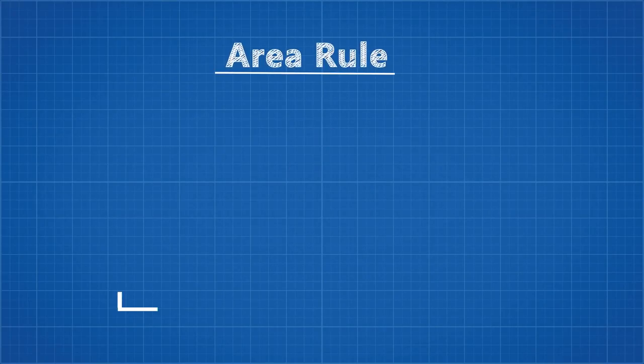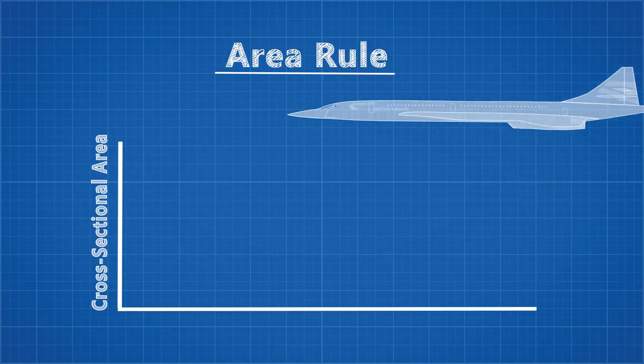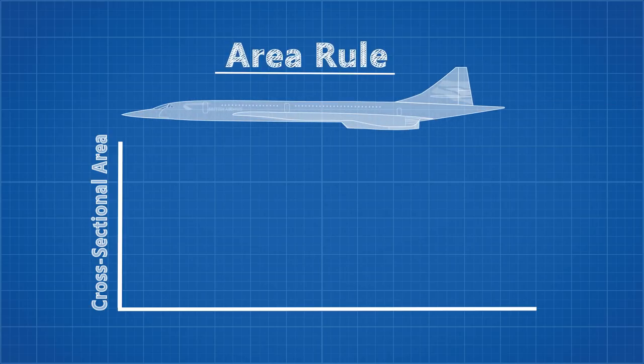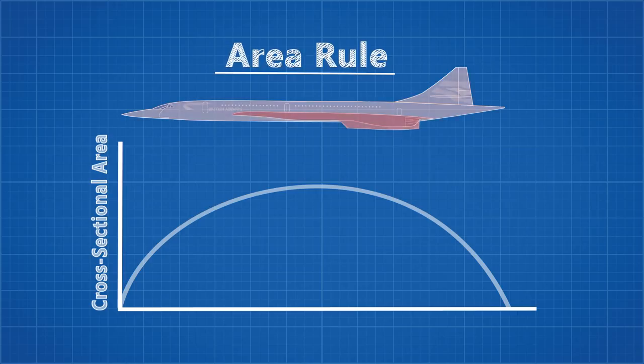This simple rule is called the area rule, and it tells us the ideal distribution of cross-sectional area along the length of a transonic or supersonic plane will look something like this — that includes the wings, engines, everything. A gradual change in cross section results in a reduction in wave drag, which is the drag that arises from shock waves forming over the plane as it approaches the speed of sound.